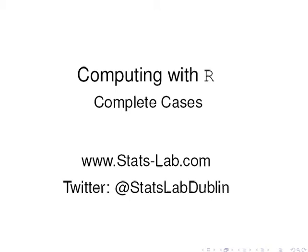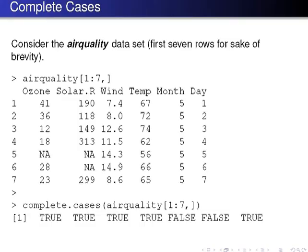In this presentation we are going to look at complete cases — that is to say, rows that have values for each variable. Consider the air quality data set; for the sake of brevity I've just looked at the first seven rows. We can see that we have five variables, but for some rows there is a missing value, an NA value. For example, the fifth row has two NAs, two missing values, and likewise the sixth row has a missing value.